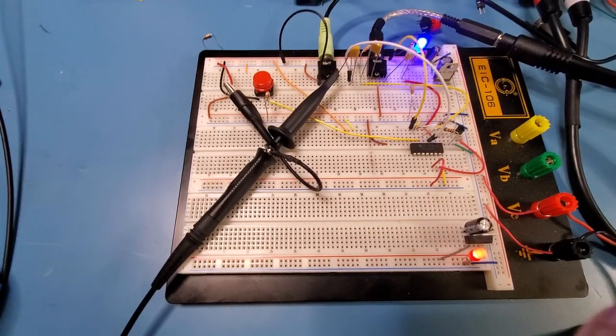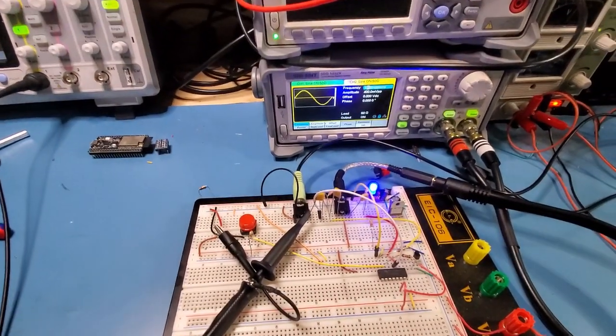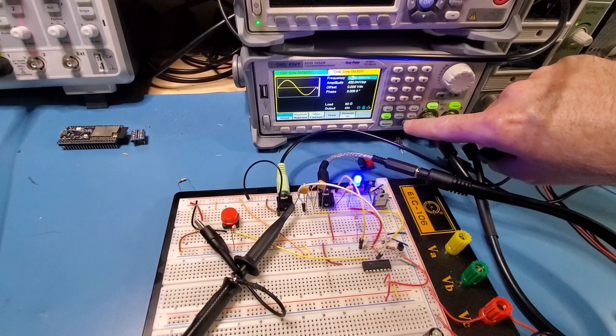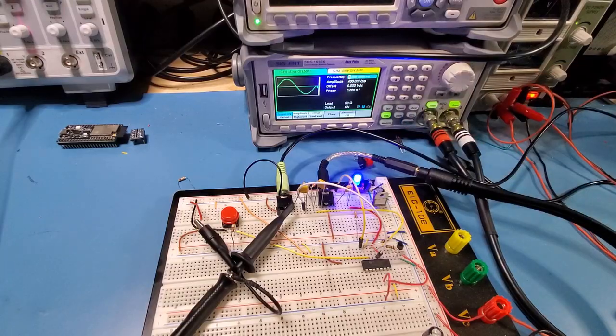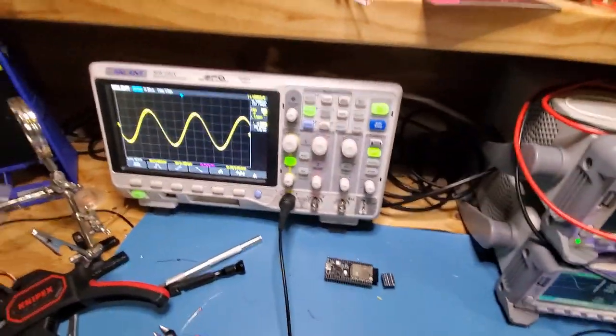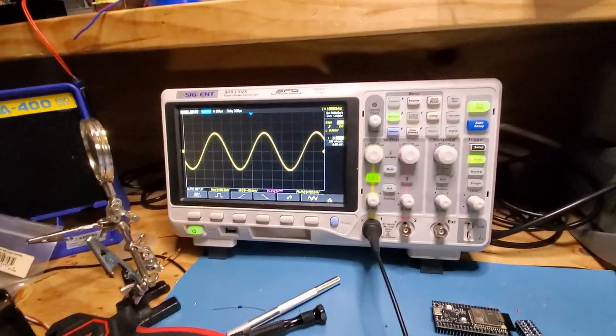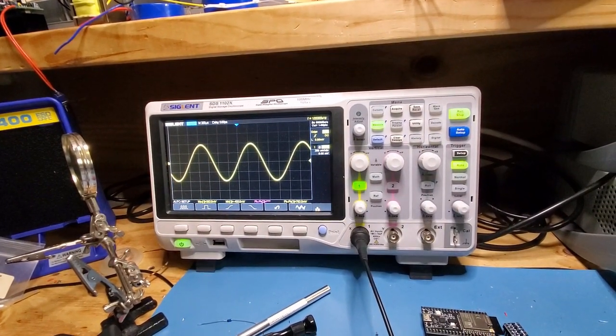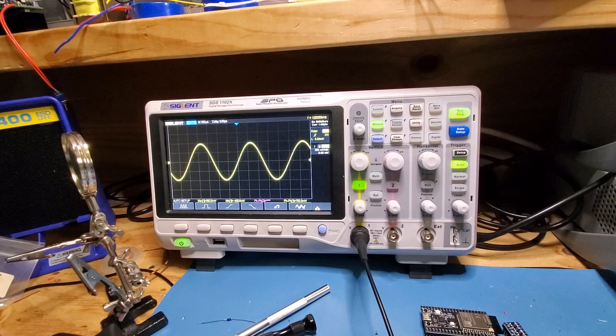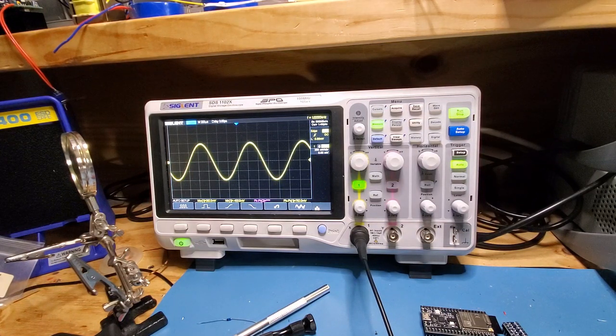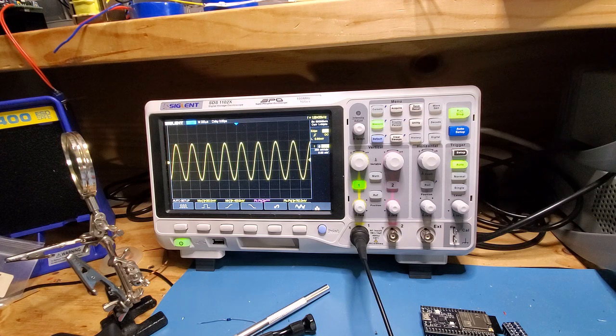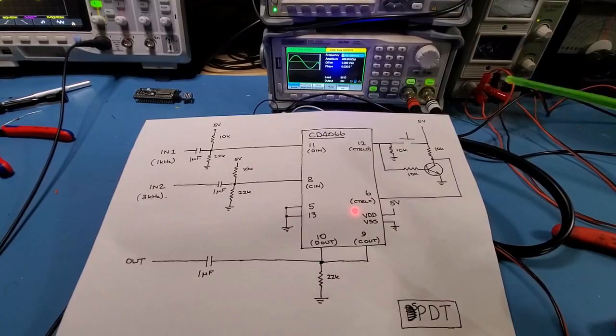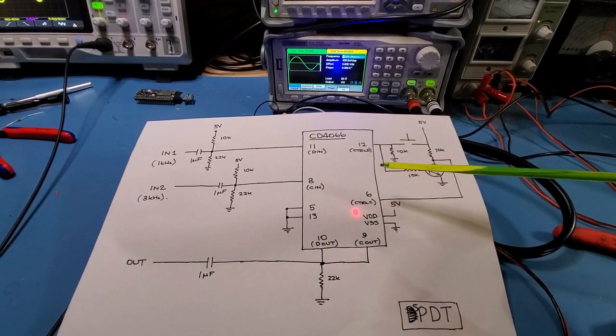And then just panning up to the signal generator you can see here I've got channel 2 is at 3kHz. Channel 1 is at 1kHz. And I've got the output sent to my oscilloscope here. So let's turn the speaker up. So that's that 1kHz tone as I press the button. There's 3kHz.